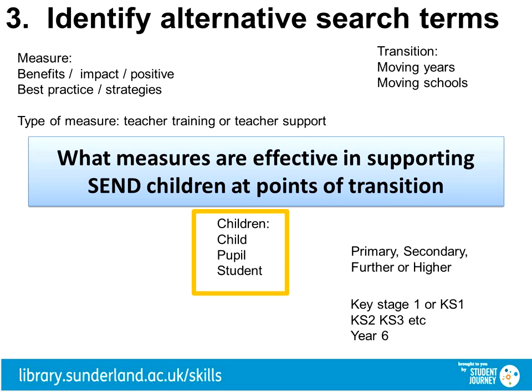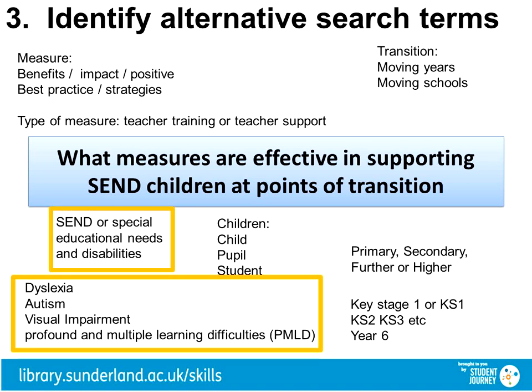Different articles will also use different language to describe children. You could use child, pupil, or student. Finally, alternatives to SEND — in full, or use the acronym — and whether there's a specific SEND that you're exploring for the question. SEND is the broad term, but autism is a narrower, more specific term.